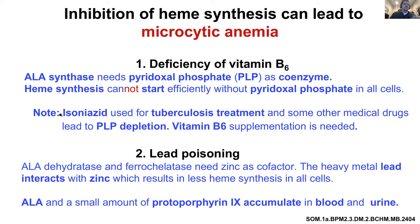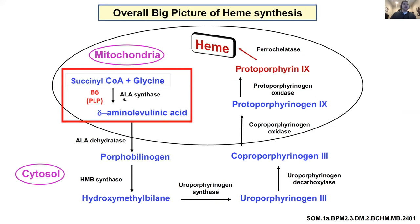One thing that may not have come up specifically but is blown up in First Aid is isoniazid - one of the first-line treatments for tuberculosis. It just eats up all the B6 in your body. So if you see anything with isoniazid, think of some sort of PLP or B6 deficiency. It just mops it all up. Keep that in mind. ALA synthase - I'm pretty sure this is the rate-limiting step of this pathway. B6 and PLP are used here.